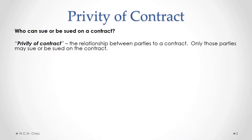The legal doctrine of privity of contract determines who can either sue or be sued on a contract. The people who are privy to a contract are the parties to a contract, and therefore only parties to a contract can sue or be sued.